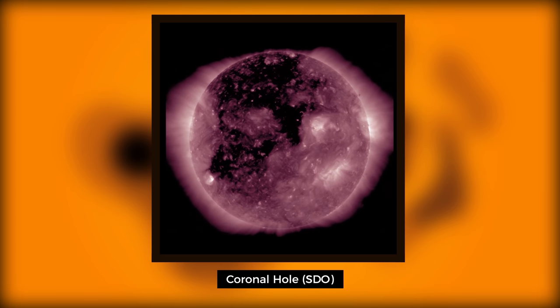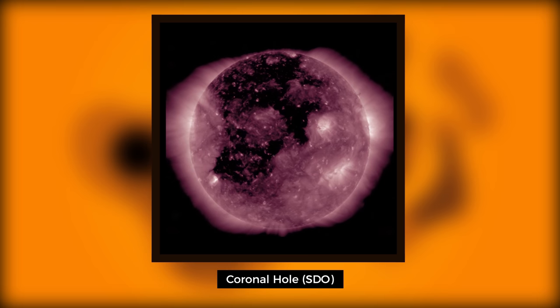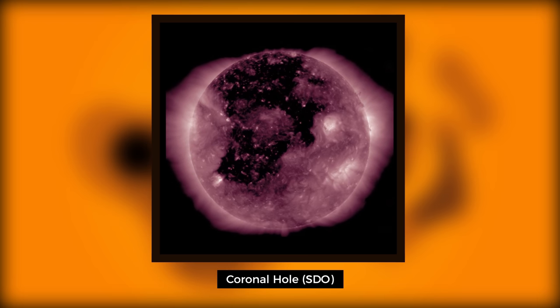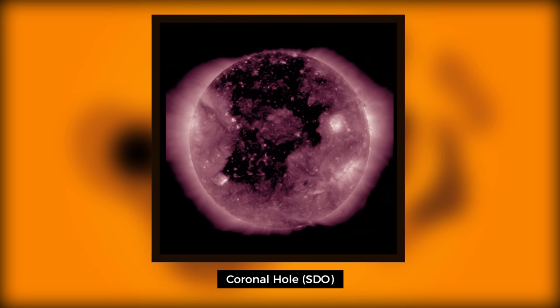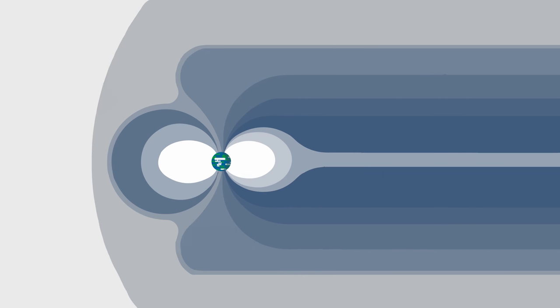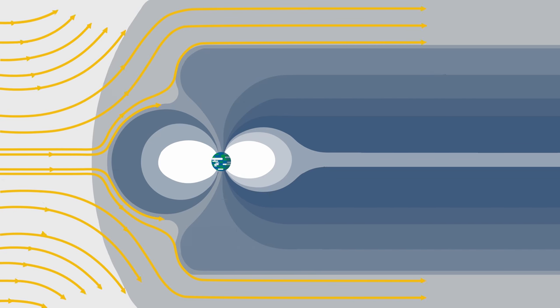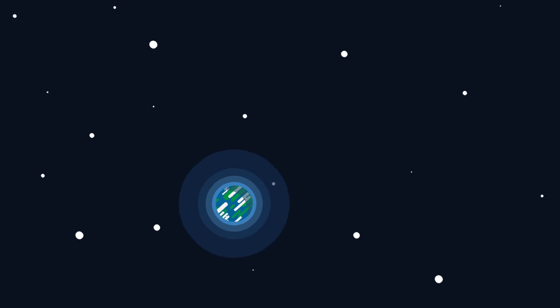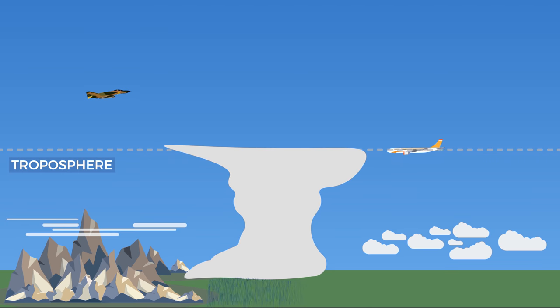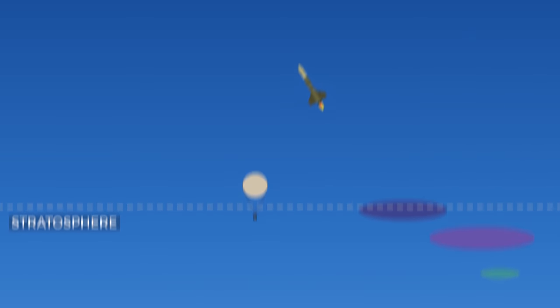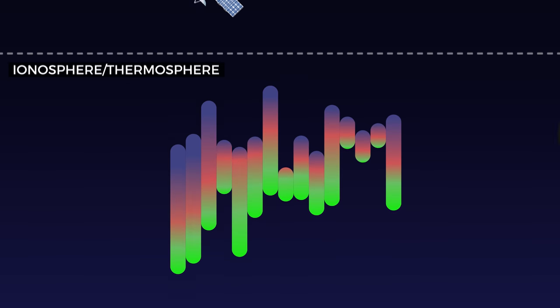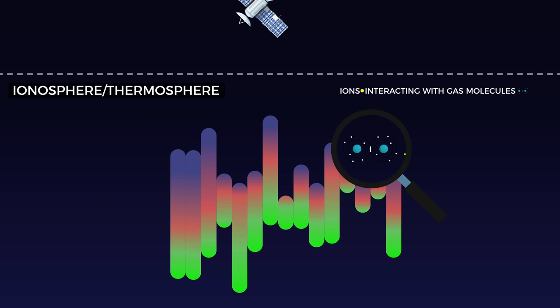As we approach solar minimum and sunspot numbers decline, coronal holes will become the primary cause of aurora. Once the plasma cloud from the CME or coronal hole stream penetrates our magnetic field and reaches the ionosphere, a region of the atmosphere bordering the edge of space, it interacts with gas molecules which produce photons resulting in the aurora.